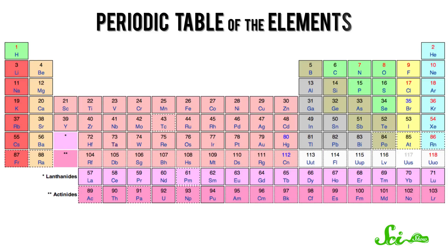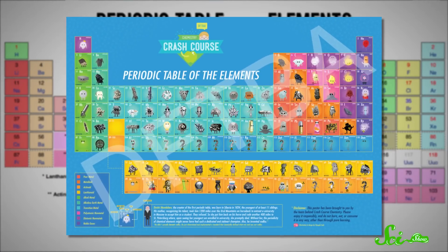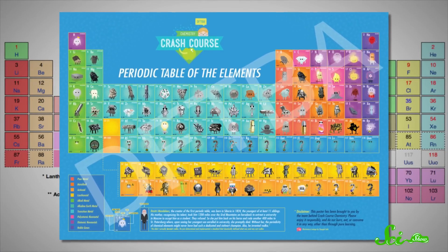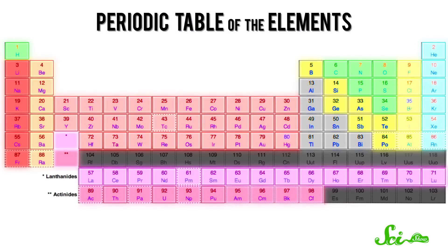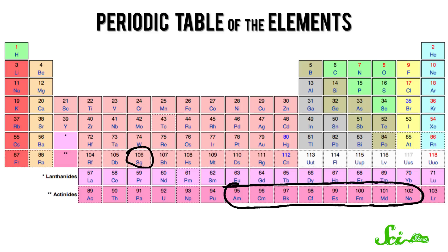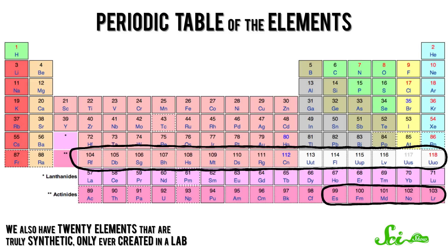Yes, he created elements. Have a look at your periodic table if you have one — if you don't, go to DFTBA.com and buy the Crash Course Chemistry giant periodic table. Technically, all of the elements through atomic number 98 occur naturally on Earth, but nine of those occur so rarely that they were synthesized in a lab before they were ever found in nature. Seaborg helped discover or create most of these. So far, we also have 20 elements that are truly synthetic, only ever created in a lab.